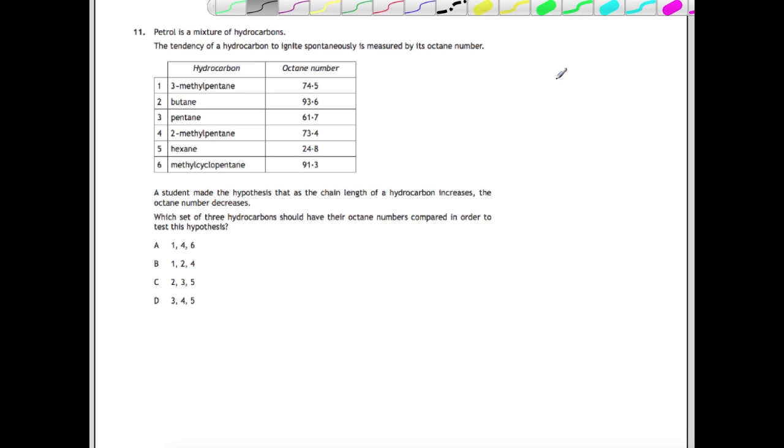Question 11 is more of a problem solving type question here. Petrol is a mixture of hydrocarbons. The tendency of a hydrocarbon to ignite spontaneously is measured by its octane number. You're given a range of hydrocarbons and their octane numbers. A student made the hypothesis that as the chain length of a hydrocarbon increases, the octane number increases. Which set of the hydrocarbons should have their octane numbers compared? You're looking for something where only the chain number increases.